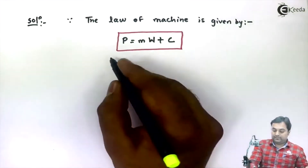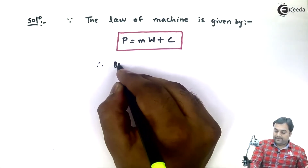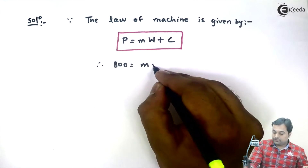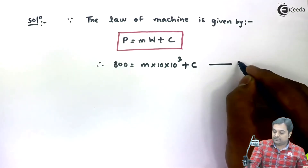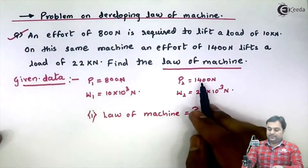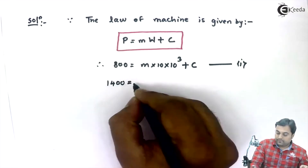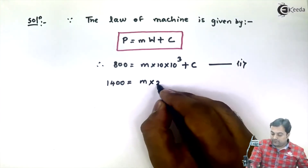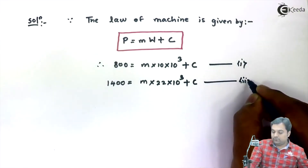First, using the first condition: P1 = 800 = M into W1, which is 10 into 10 raised to 3, plus C. This is equation number 1. Next, using the second condition: 1400 = M into 22 into 10 raised to 3, plus C. This is equation number 2.